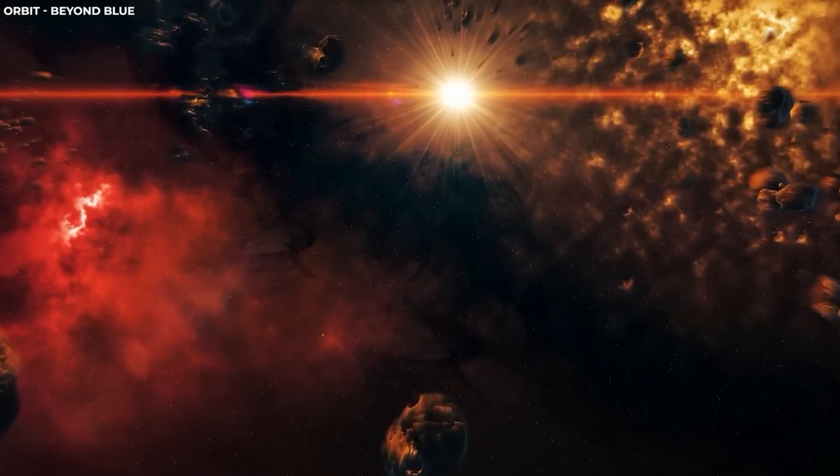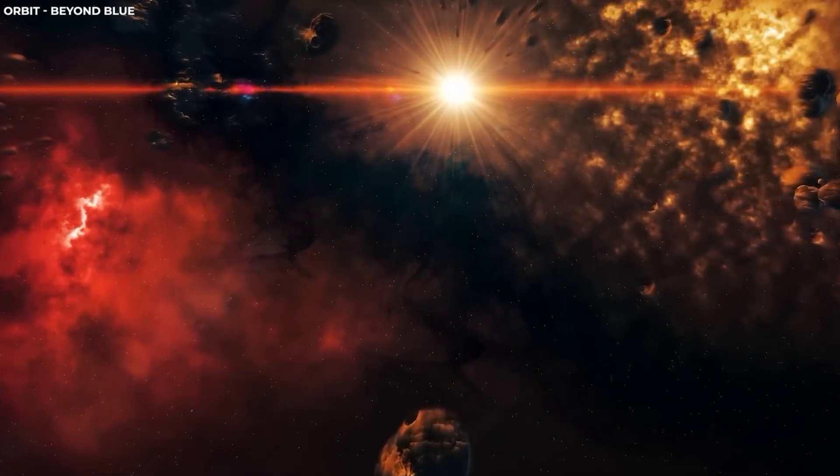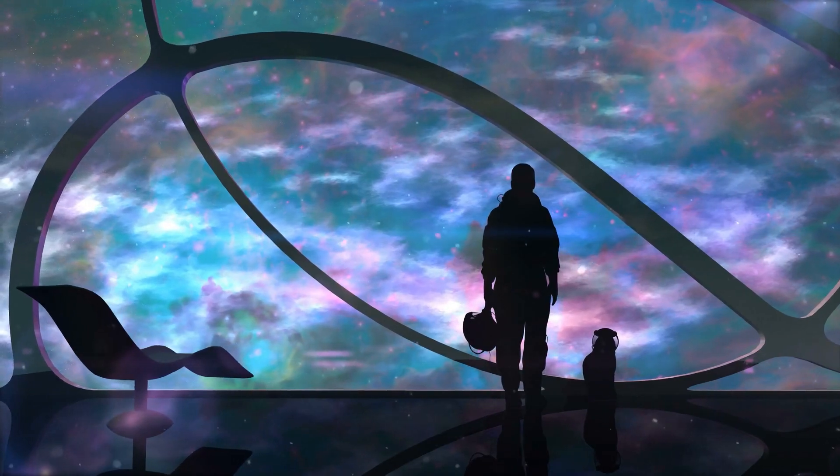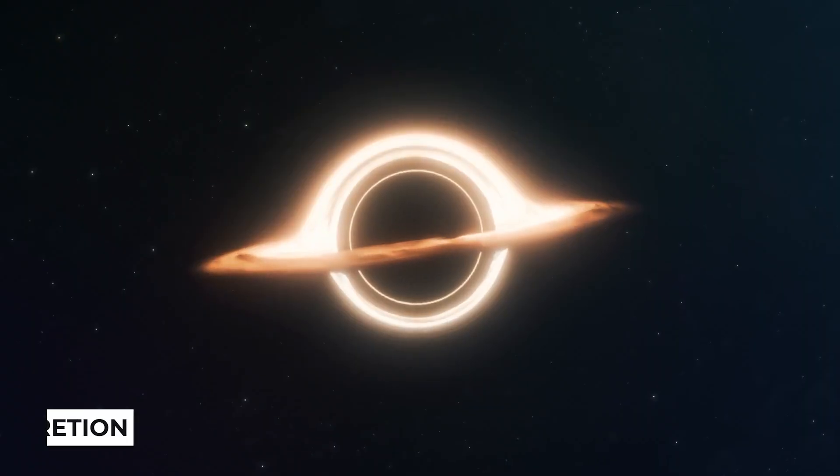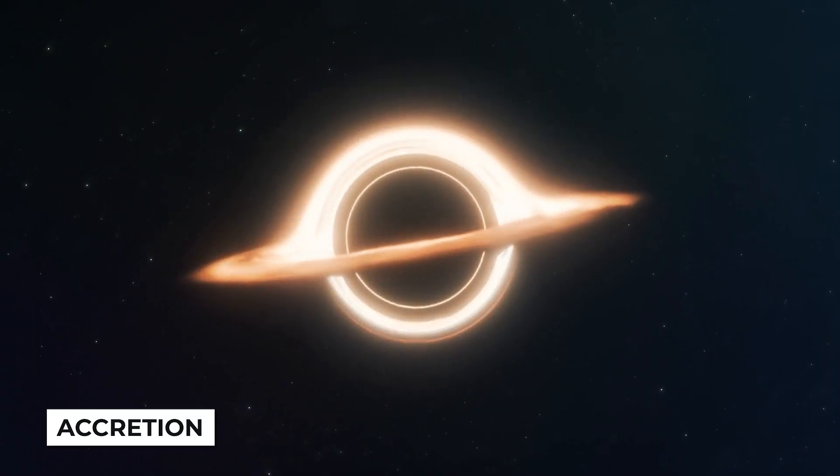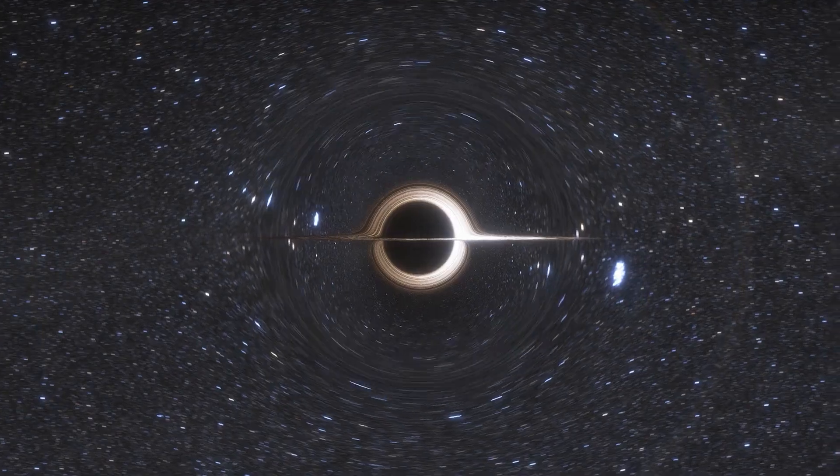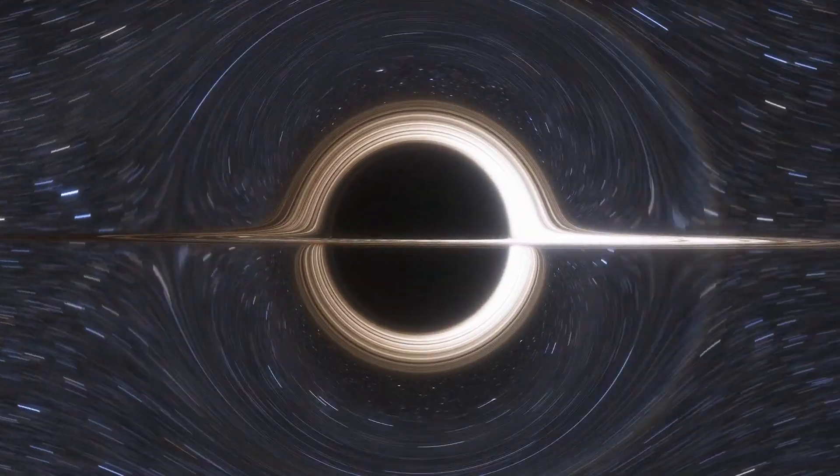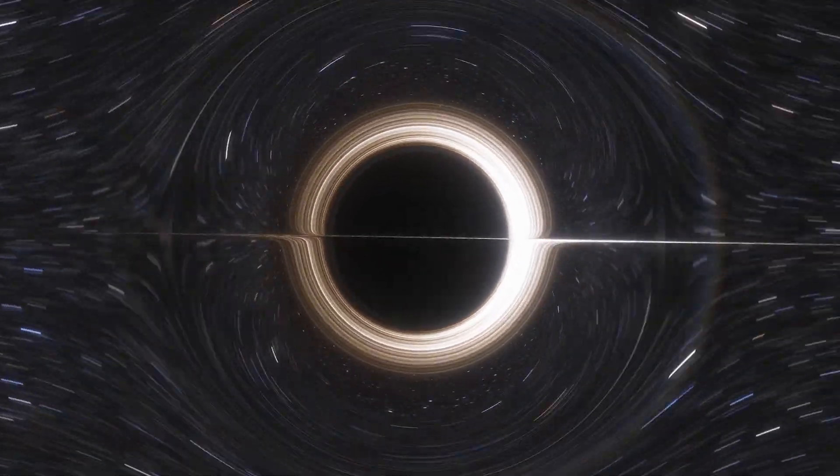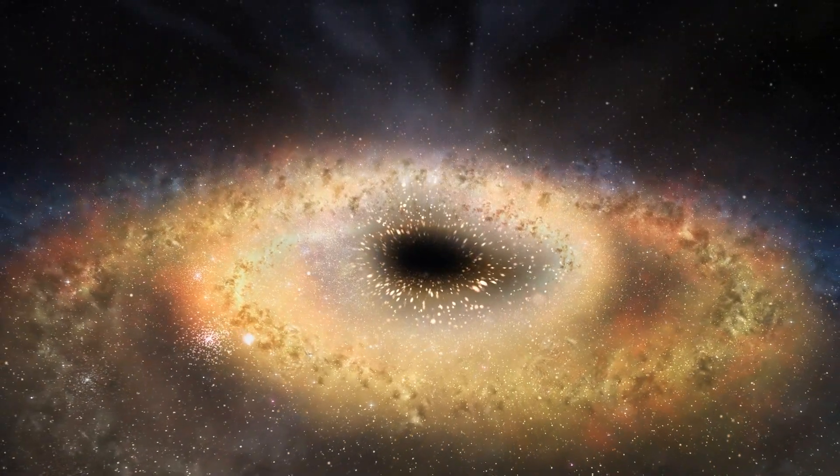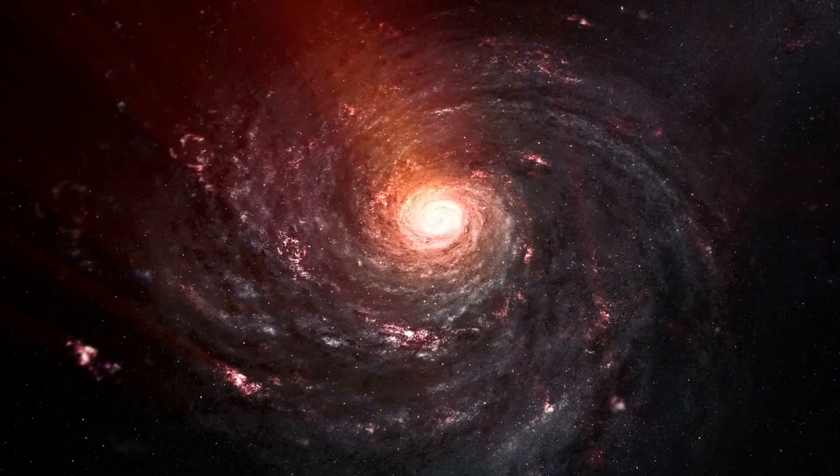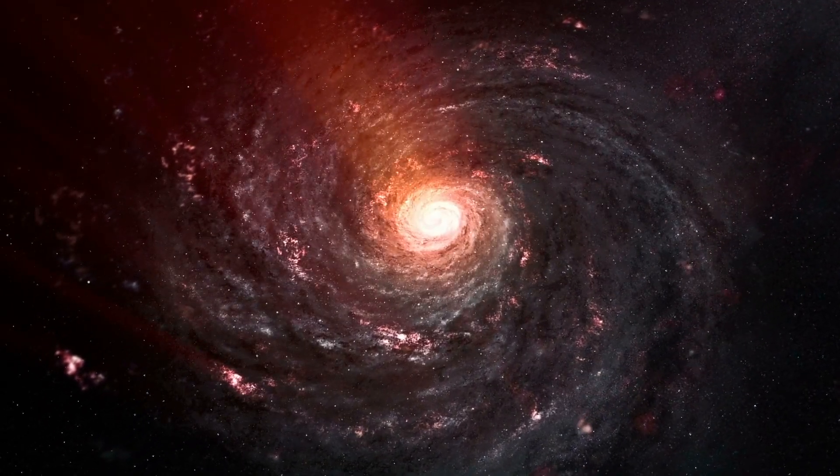There are a few possible explanations for what astronomers are seeing. Maybe the light we're viewing isn't actually coming from stars, but accretion. Accretion occurs when particles accumulate into a massive object due to gravitational forces, a phenomenon we know as supermassive black holes. If this is the case, the galaxies may appear much larger than they actually are.